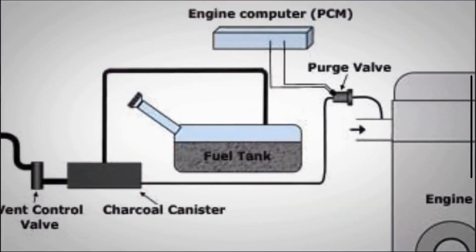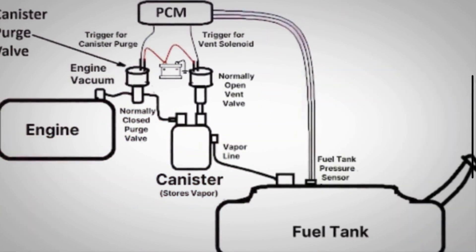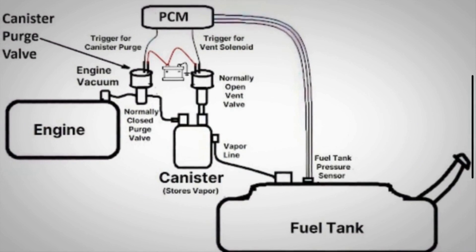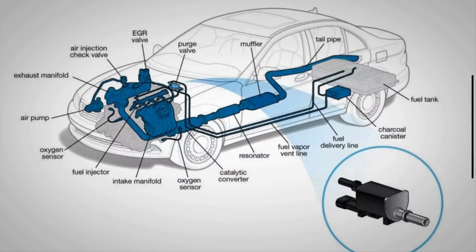The primary function of the purge valve is to control the flow of fuel vapors from the charcoal canister to the engine's intake manifold, where they can be burned during the combustion process. By doing this, it helps to reduce harmful emissions and keep your vehicle running efficiently.